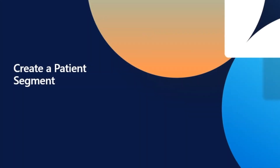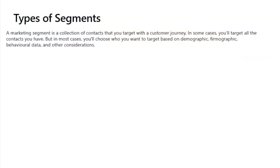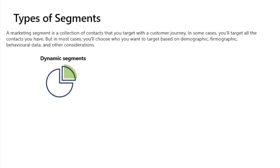Create a patient segment. Types of segments. A marketing segment is a collection of contacts that you target with a customer journey. In some cases, you target all the contacts you have, but in most cases, you'll choose who you want to target based on demographic, firmographic, behavioral data, and other considerations. Dynamic segments are set up using logical expressions such as patients from the Manchester Clinic or all patients who are registered for an event. Membership in a dynamic segment changes constantly to reflect new or removed patients and updated patient information.